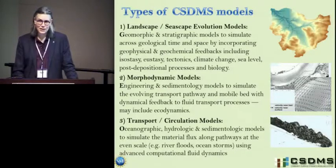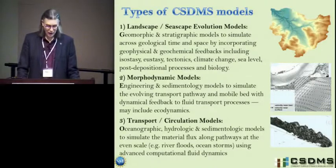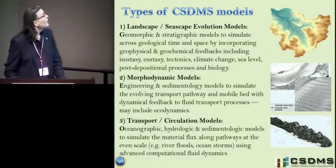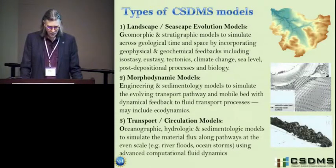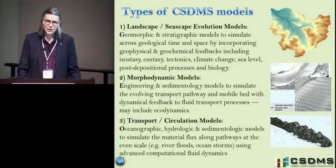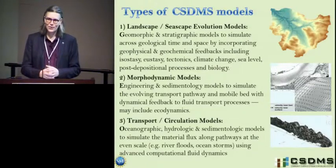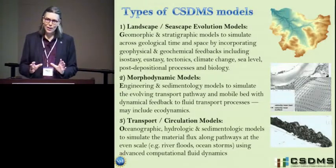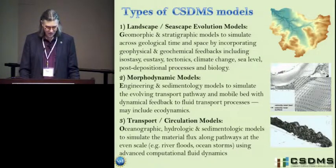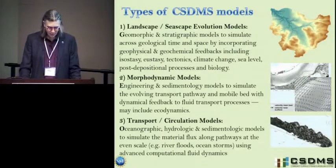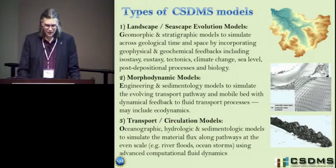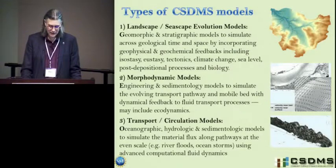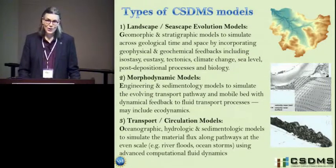Let me go on to the types of models that CSDMS now has under its umbrella. The first type is landscape-seascape evolution models — stratigraphic and geomorphic models that simulate across geological time and space. We're not talking hundreds of years; we're talking thousands if not millions of years. They incorporate a variety of boundary physics, such as geophysics and geochemistry feedbacks, including sea level, climate change, tectonics, and post-depositional processes. There's a large community within CSDMS that does this kind of modeling.